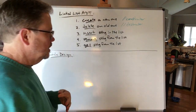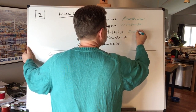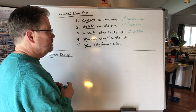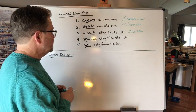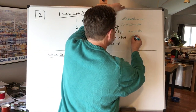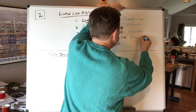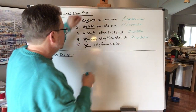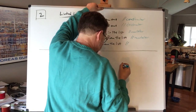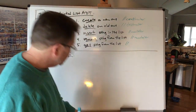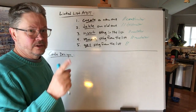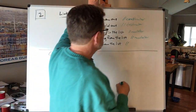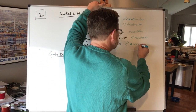Insert something into the list changes the list, so that's a mutator. Remove something from the list also changes it — also a mutator. And get something from the list doesn't change it at all — we just get a copy of the stored data — so that, at least for now, is our one and only accessor.